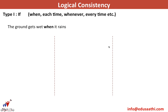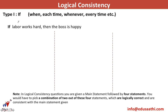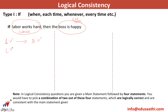Let's take another question: if the labor works hard, then the boss is happy. The cause is the labor working hard, and the effect is the boss being happy. If the labor worked hard, the boss is definitely happy — cause leads to effect. If the labor did not work hard, will the boss be happy? I cannot say, because the boss can be happy for other reasons, like getting married. If the boss is happy, does it mean the labor worked hard? No — maybe the boss had his first child. If the boss is not happy, this definitely means the labor did not work hard.